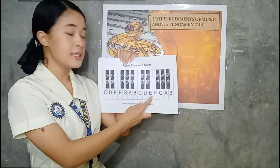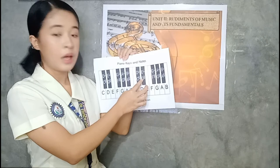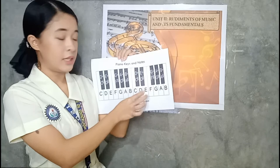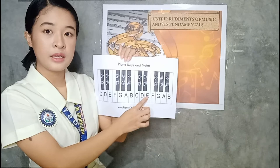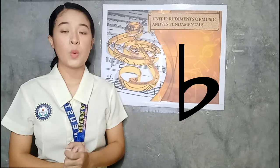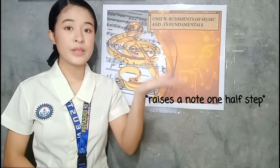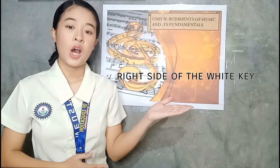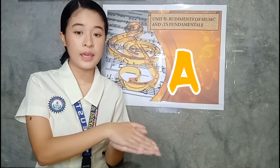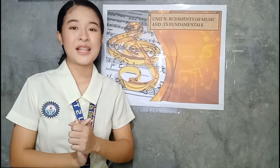For example, this is an E, and as you can see, there's a black key in between. The black key on the left side of E is the E flat. Its symbol is derived from a stylized lowercase B. What is sharp? Sharp is the opposite of flat — sharp raises or increases a note one half step. You can find it on the right side of a white key. Its symbol looks like a number sign.